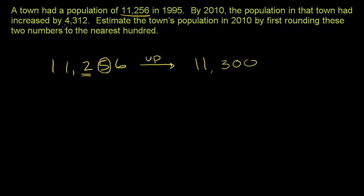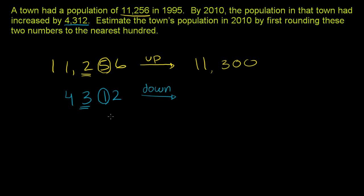Now we added 4,312 people, so 4,312. We look at the hundreds place and go one spot below that. The question we're trying to answer: do we go down to 4,300 or do we go up to 4,400? Which one is closer? Well, we see we only have a 1 here.